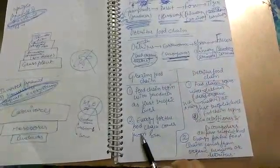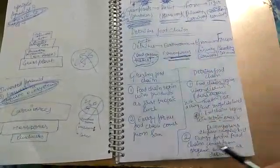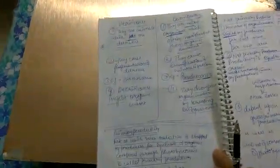They start with decomposers and detritus at first trophic level. In grazing, energy is from the sun. In detritus food chain, energy comes from dead organic matter.